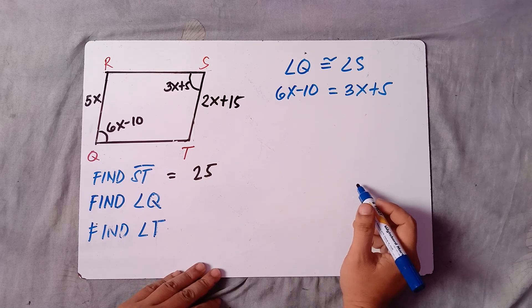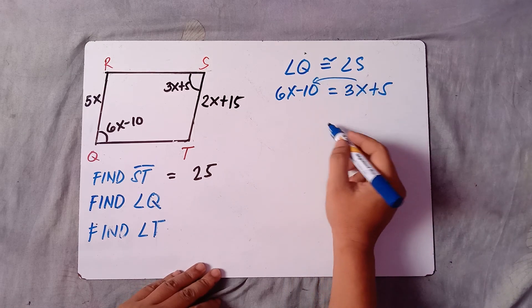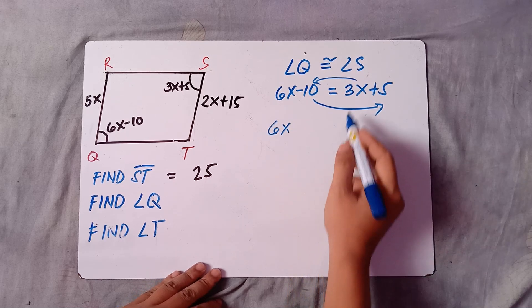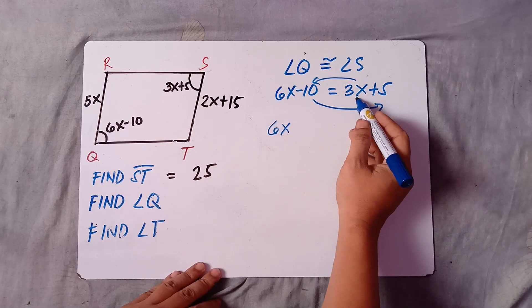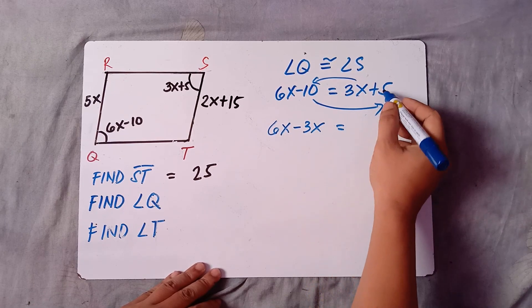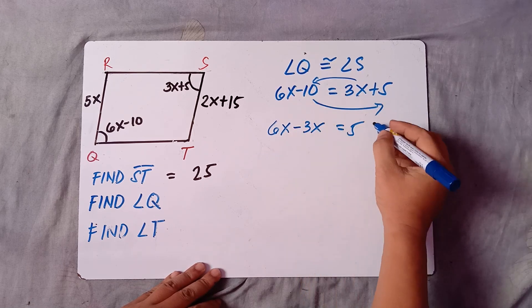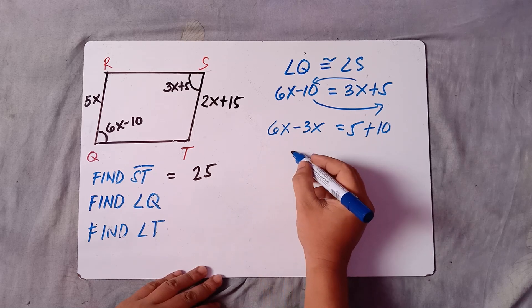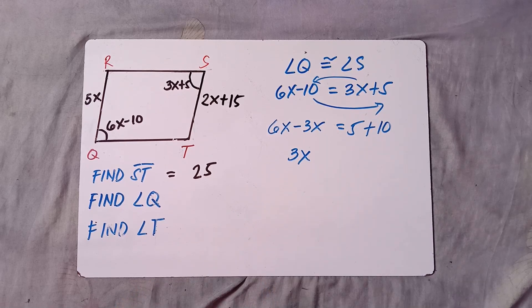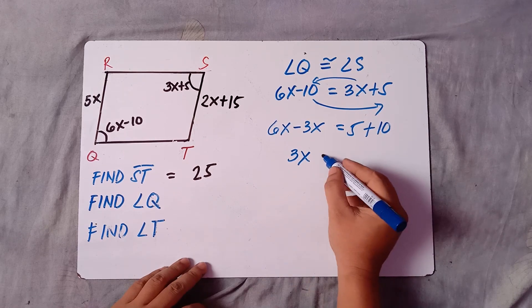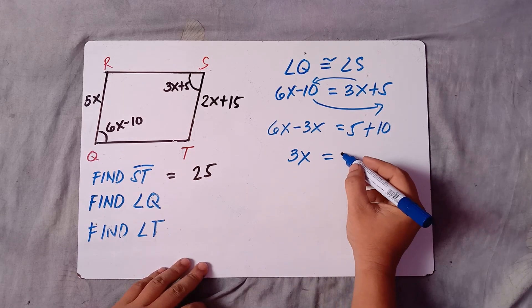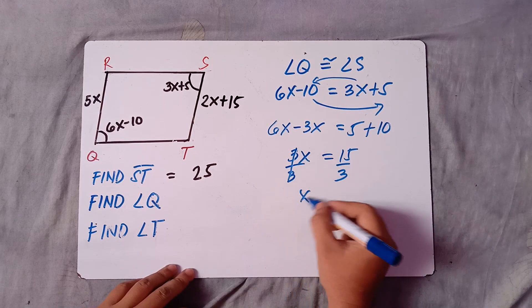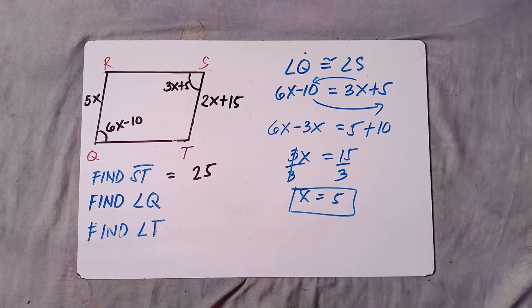To get the value of X, transpose: 6X minus 3X equals 5 plus 10, giving 3X equals 15. Divide both sides by 3, so X equals 5.